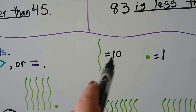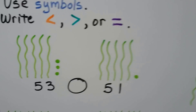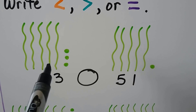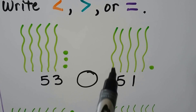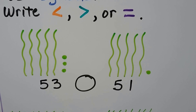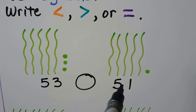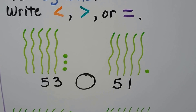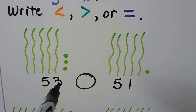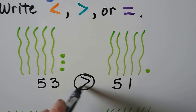One long squiggle is equal to a ten; one little dot is equal to a one. We have five tens — 10, 20, 30, 40, 50 — and three ones; and here we have 50 and one one. Is 53 less than, greater than, or equal to 51? They have the same number of tens, so we look at the ones. 3 is more than 1, so 53 is greater than 51.